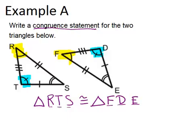So this is one possible congruent statement. Keep in mind, you could have chosen any order for the letters RTS, as long as you made sure that they matched how you did the triangle FDE.